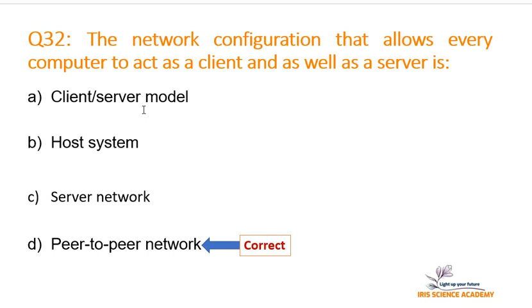When we talk about Peer-to-Peer Network, all devices are at the same standard, meaning all devices are clients and servers at the same time. They are all responsible for controlling and managing the network, as well as putting in requests as a client to access resources, and they also play a part in network management. So from all these options, D is the correct and best matching option.